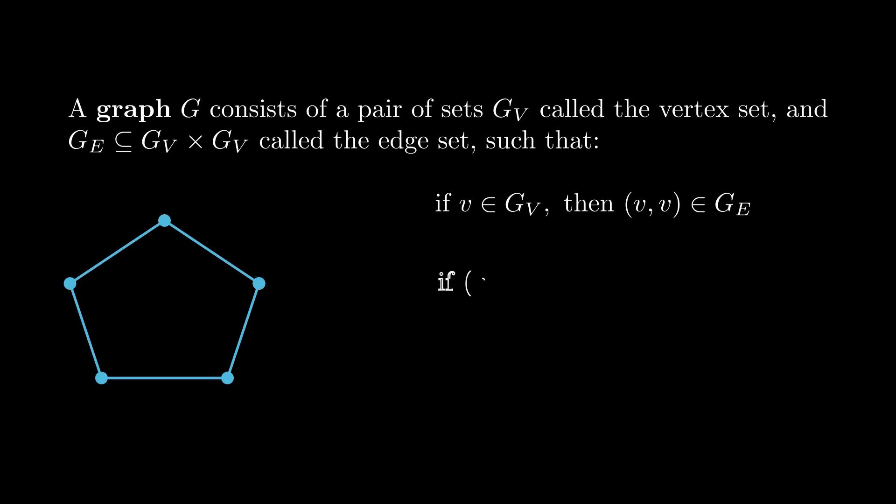The second condition is that the set is symmetric. So whenever V, W is in the edge set, W, V is also in the edge set. So what this means is that whenever we have an edge from V to W, there's a corresponding edge in the other direction from W to V. And again when we draw these pictures, we suppress them and draw them as one undirected edge. So in particular our graphs are simple undirected graphs. Oftentimes we'll write V tilde W to mean that V, W is in the edge set.